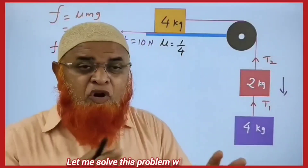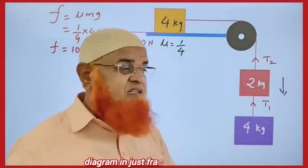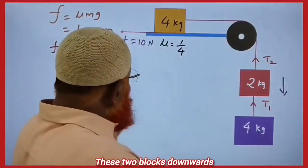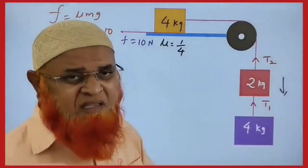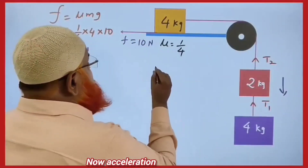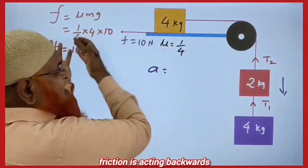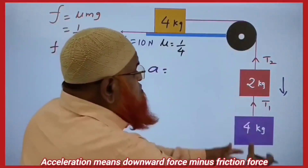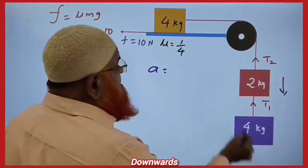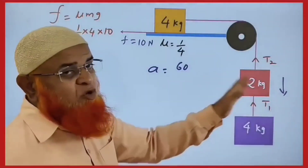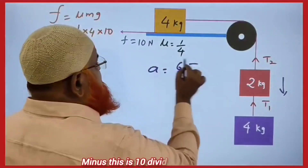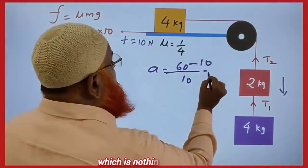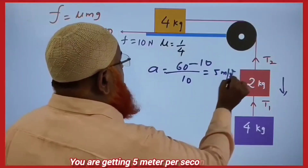Let me solve this problem without a free body diagram in just a fraction of seconds. We need to find the acceleration of the system where two blocks move downward. Acceleration equals downward force minus friction force, all divided by net mass. Downward force is 60 N (2 plus 4 is 6 into g). Friction is 10 N. So acceleration is (60 minus 10) divided by 10, giving 5 meters per second squared.